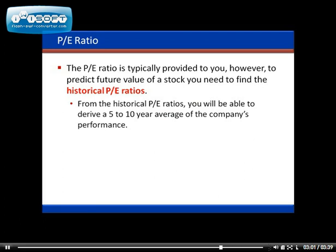However, to predict the future value of a stock, you will need to find historical PE ratios. From these historical PE ratios, you will be able to derive a five-to-ten year average of the company's performance. The current PE ratio is easy to find in the Wall Street Journal or on any financial website. The historical PE ratio requires a bit more research, but it is critical to get that five-to-ten year average to properly value a stock.